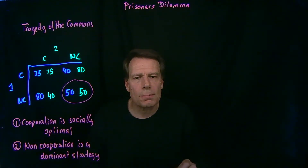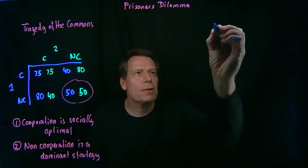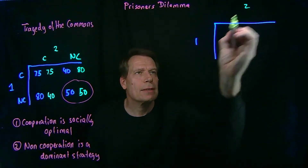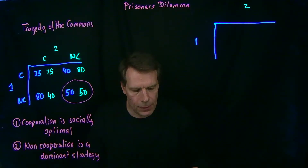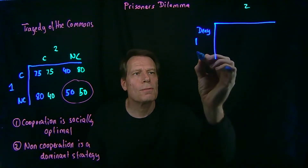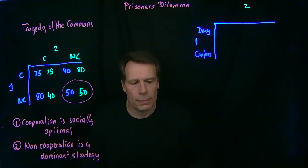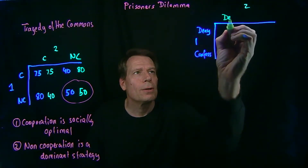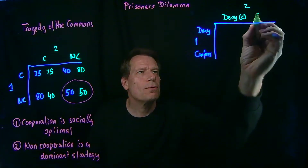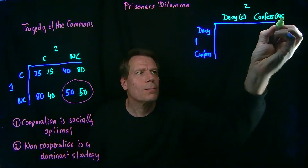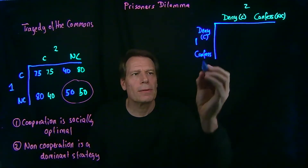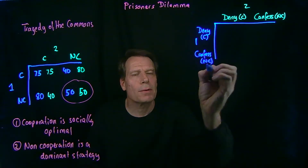So the district attorney takes the two prisoners and puts them in separate rooms and constructs a game for them. We'll have prisoner 1 on this axis, prisoner 2 on this axis, and he tells each of them the same thing. You can either choose to deny the murder, or you can choose to confess to the murder. When you deny, you are actually cooperating with the other prisoner in covering up the murder. When you confess, you are not cooperating. So deny here is equivalent to cooperating with your partner; confessing is equivalent to not cooperating.